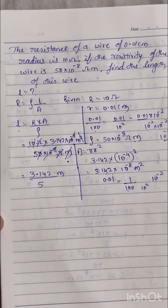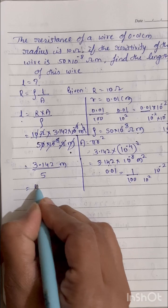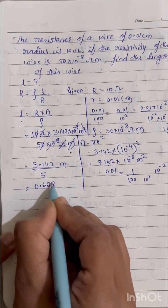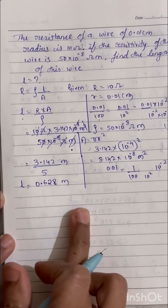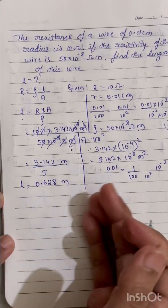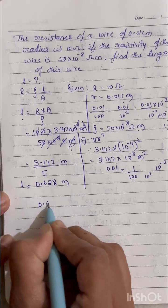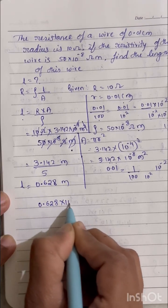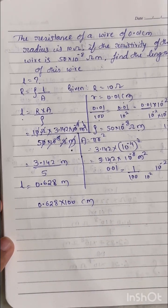Now let's do the division here. So after dividing I'll get 0.628 meter. So length I found 0.628. Now what we have to do, let's convert to the centimeter.